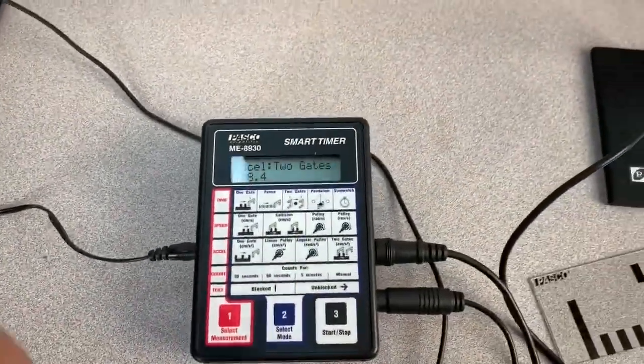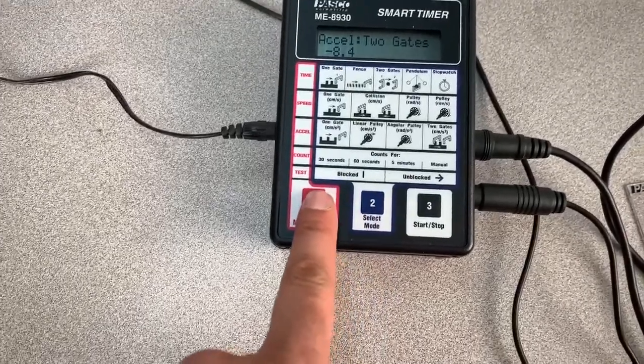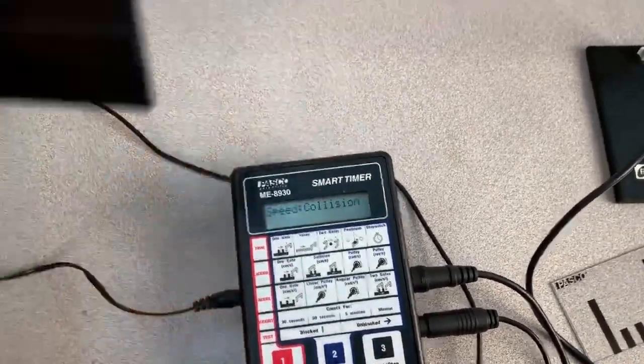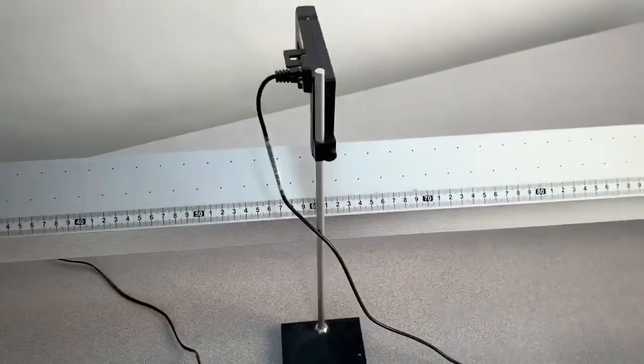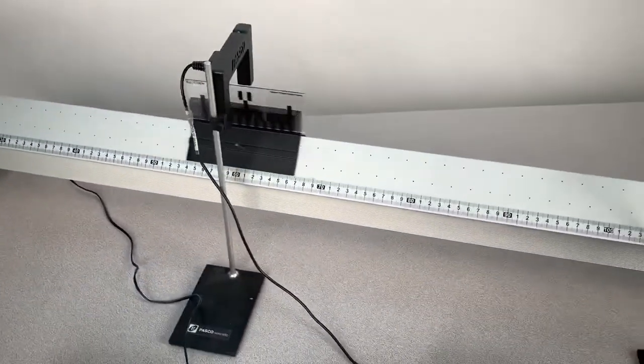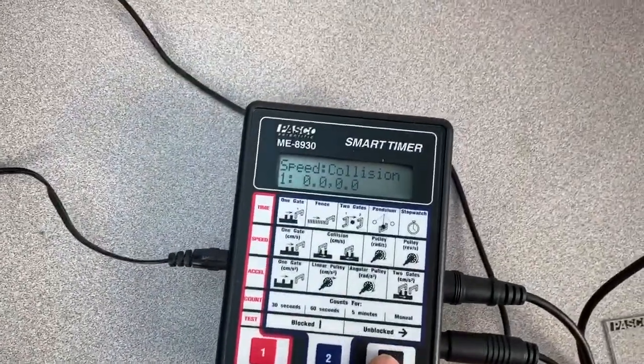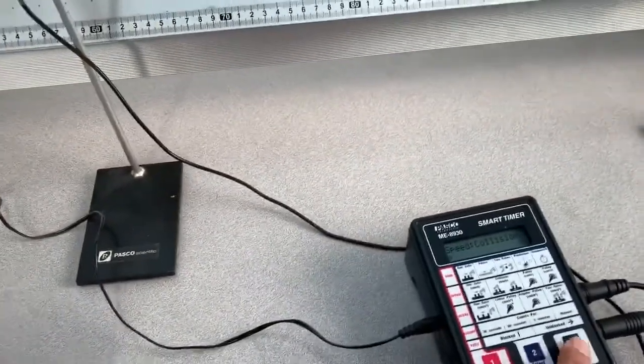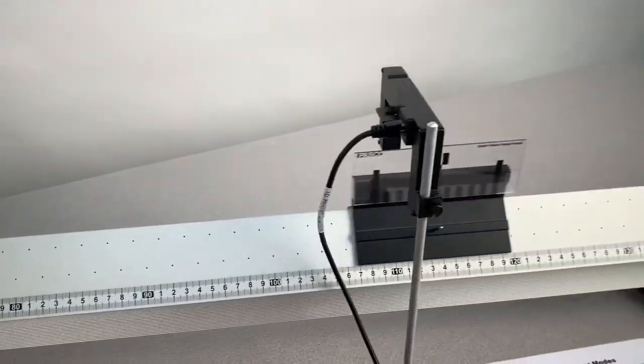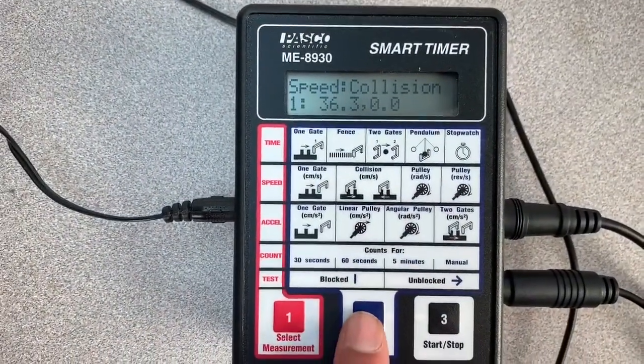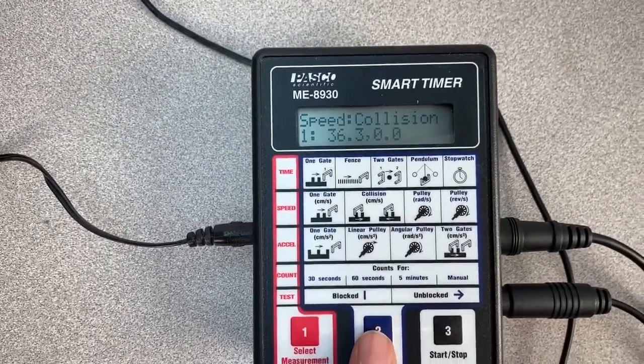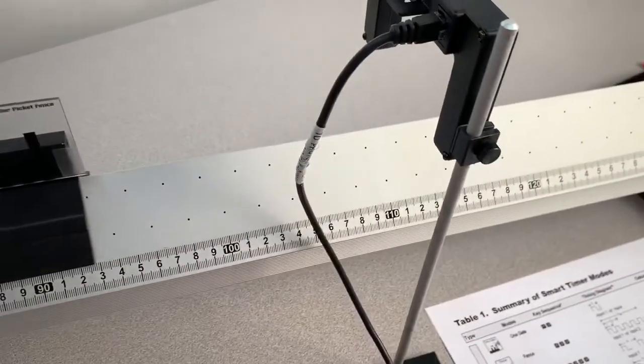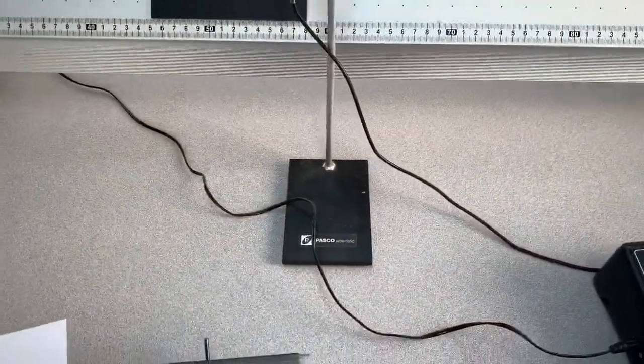Another method if we want to get the velocity at two different points, I can change back to speed measurement and I want to select the collision mode. With this you can press start, give the cart a little push, and here I press stop. Let's try that one more time. There we go. So you see the speed between the first speed recorded at the first gate is 36.3, and if I press the mode button again I get 34.9 at the second gate. So using that I can also calculate acceleration.